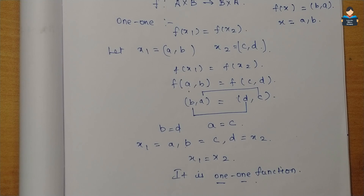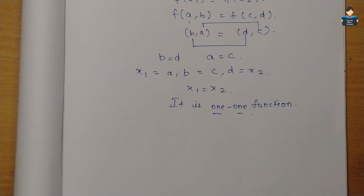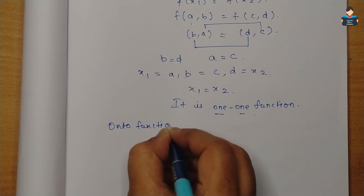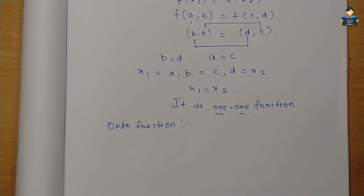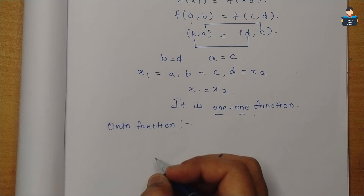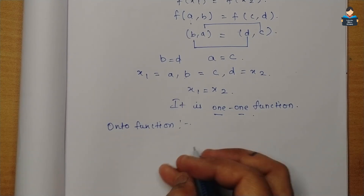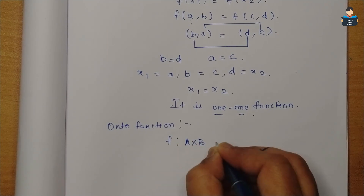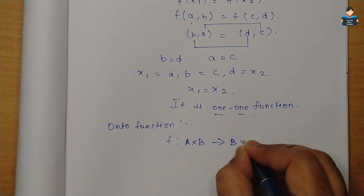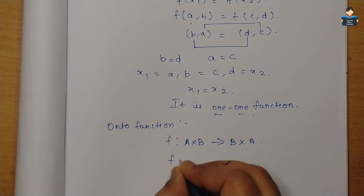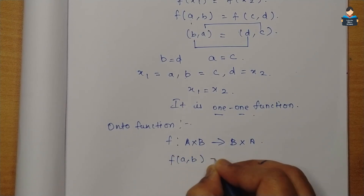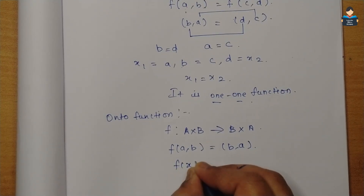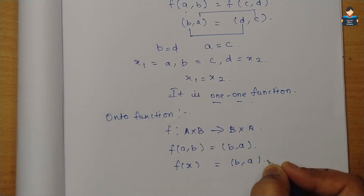Next, we check onto function. For f: A×B → B×A to be onto, we need: for every (b, a) in B×A, there exists (a, b) in A×B such that f(a, b) = (b, a).